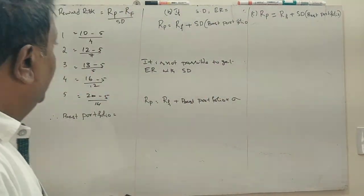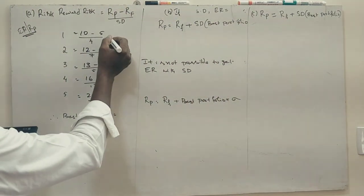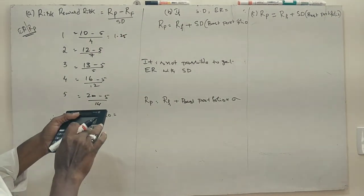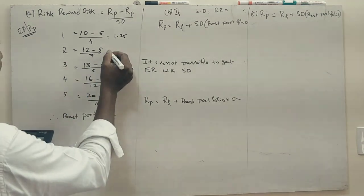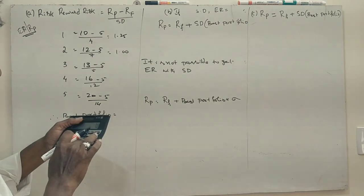So this is 5 divided by 4 is 1.25. 6, sorry, 7 divided by 7 is 1. 8 divided by 5...